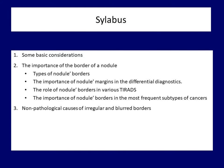Let's see the topics which will be discussed. First, I give an overview of some important considerations. Thereafter, I present the various forms of non-regular margins and try to place the importance of nodule borders in thyroid systems and in differential diagnostics of nodular goiter. I will shortly present the importance of this characteristic in different subtypes of thyroid cancers.